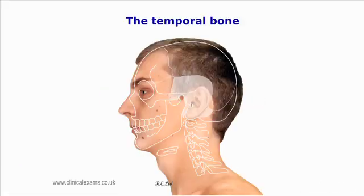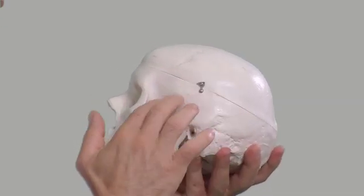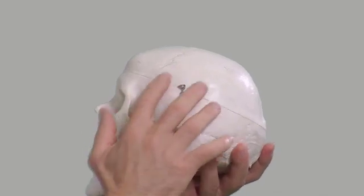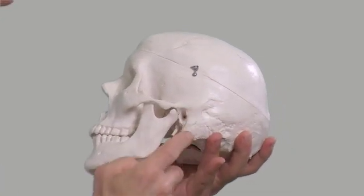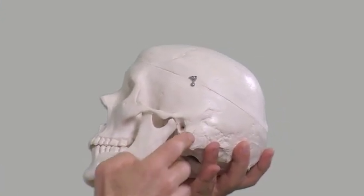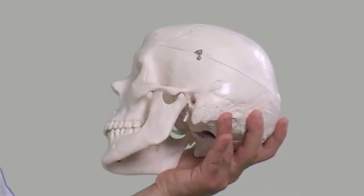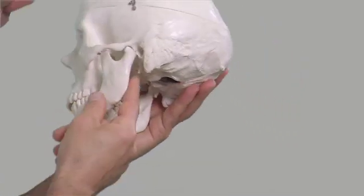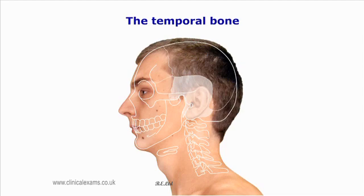The temporal bone forms the sides of the cranium, often referred to as the temples. It is made up of four parts: the squamous, which forms the broad slightly recessed area superior to the ears; the mastoid portion, which is posterior and inferior to the ears; and deep, the petrous portion and the tympanic part. The styloid process is located deep below the ears, between the ramus of the mandible and the mastoid process.